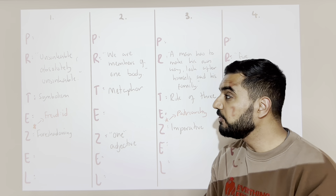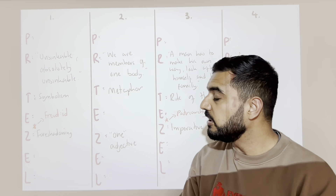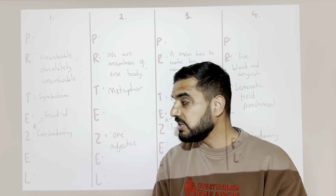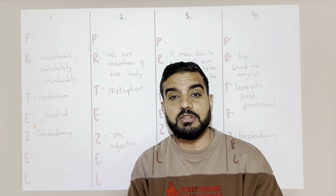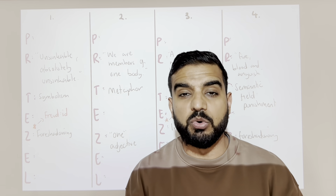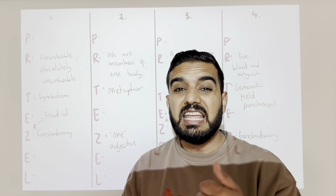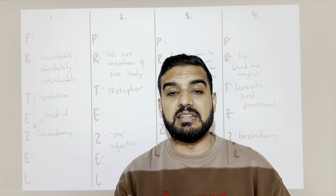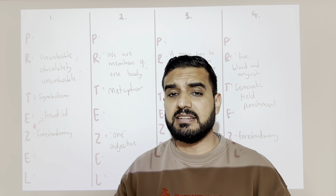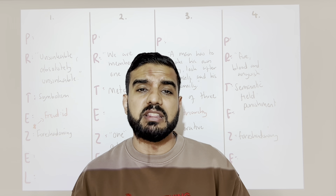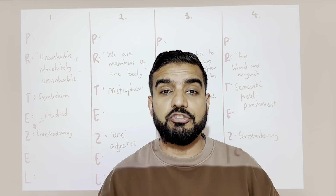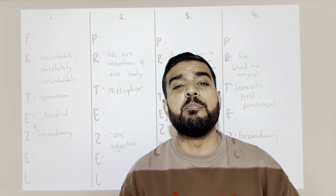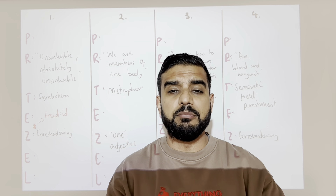Let's look at the first quote. The first quote is: 'unsinkable, absolutely unsinkable.' The technique here is symbolism. I've used Freud and the id as my context, and my structural device is foreshadowing. What are we saying about this quote? This is a lovely quote to show the arrogance of a capitalist Mr. Birling. He is saying the Titanic is unsinkable, but you can argue that the Titanic could be a symbol of patriarchy and capitalism, and Mr. Birling shows his arrogance — he believes both of those things can never be defeated.